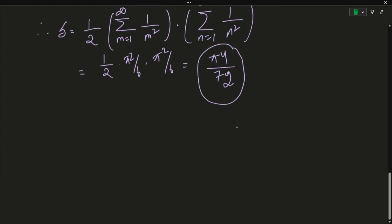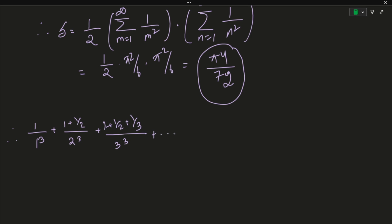Therefore the summation we started with — 1/1³ + (1 + 1/2)/2³ + (1 + 1/2 + 1/3)/3³ + ... all the way up to infinity — equals π⁴/72.